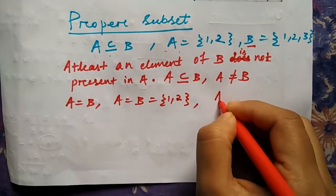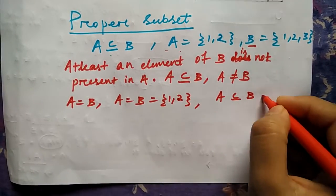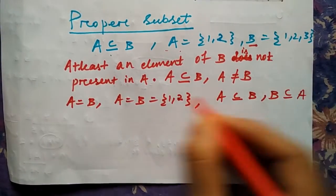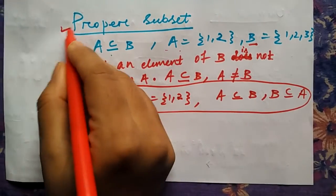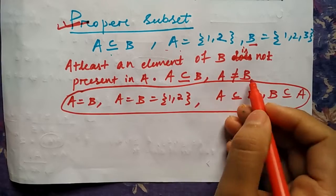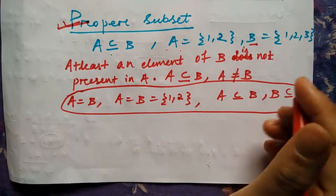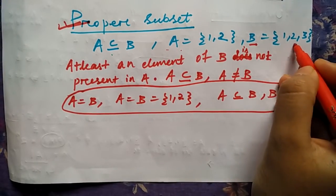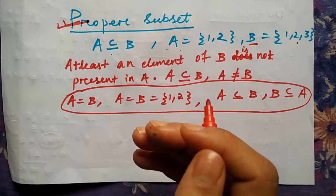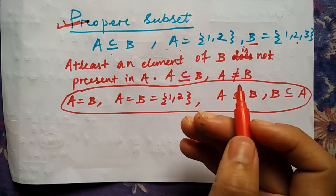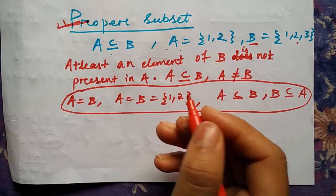If A is equal to B where A and B's elements are {1, 2}, then in that case you can say that A is a subset of B and B is also a subset of A. This is very important to remember. But in proper subset, that will never happen. A is not equal to B. It means there should be some extra element in B which should not be there in A.